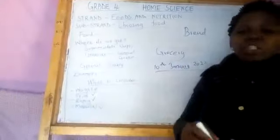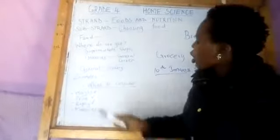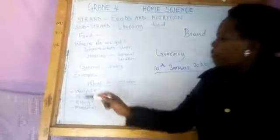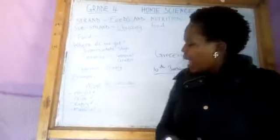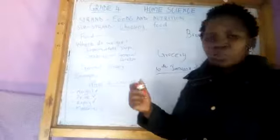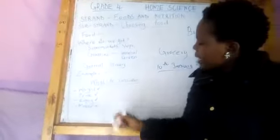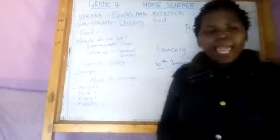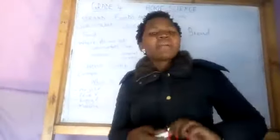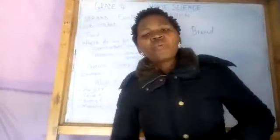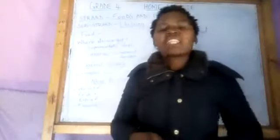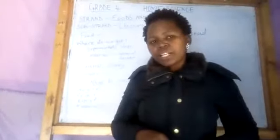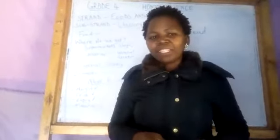When you are going to choose foods, ensure you follow all these and consider the four things: the weight, the price, the expiry date, and the material used to package the food. Have a lovely day.